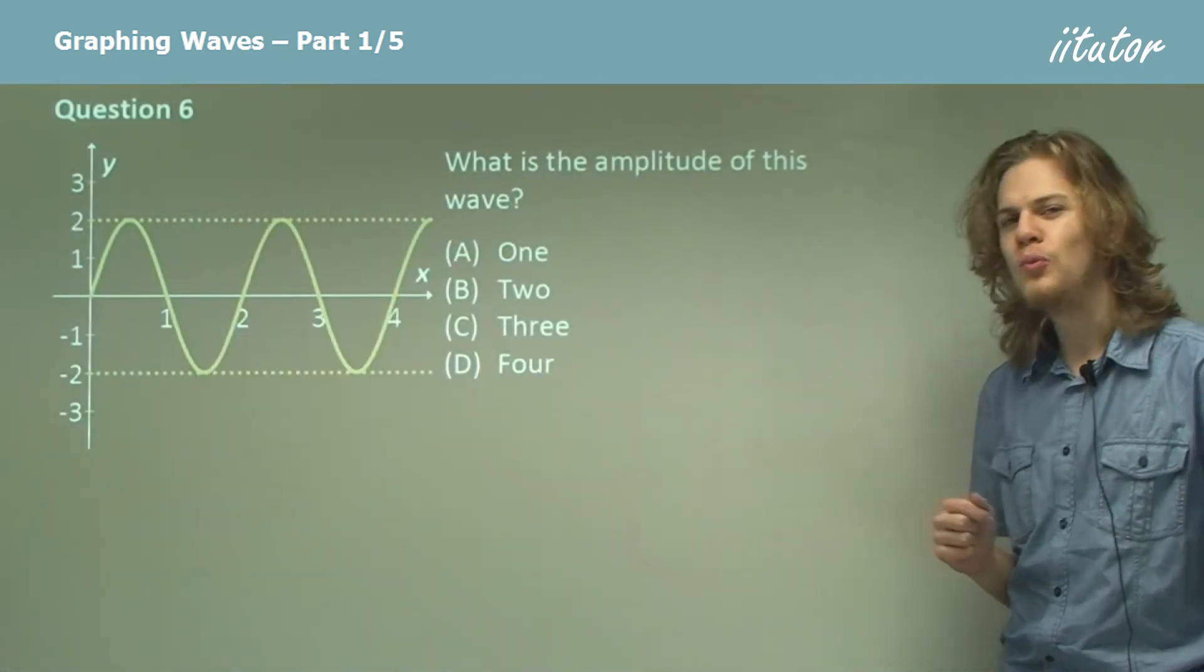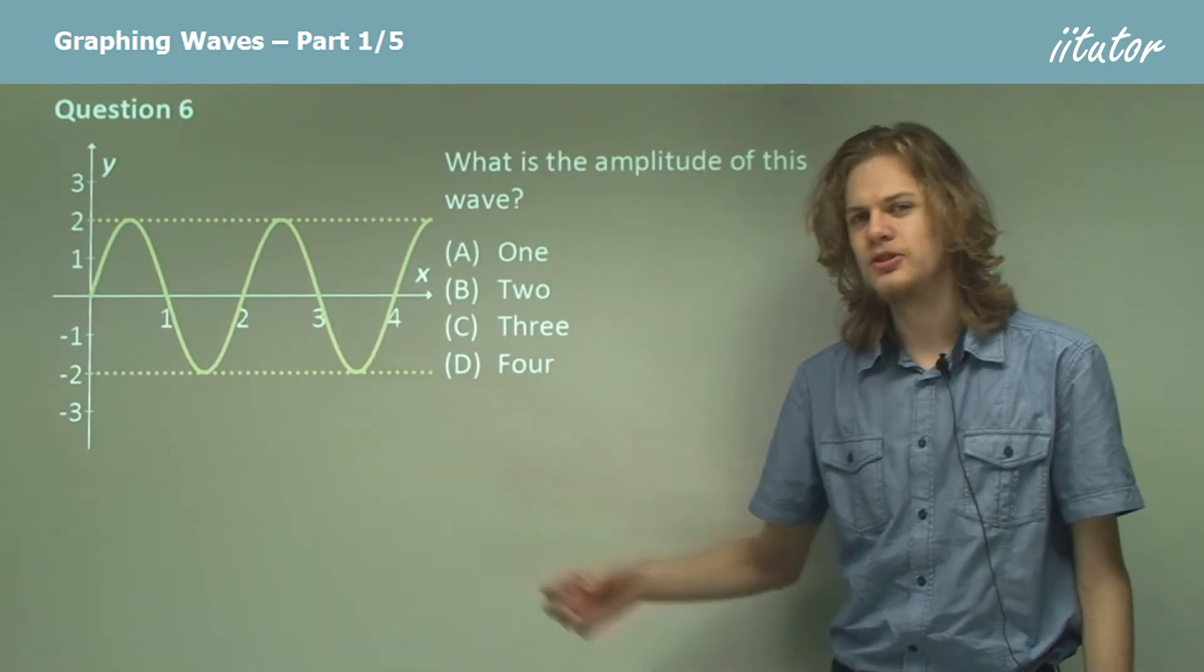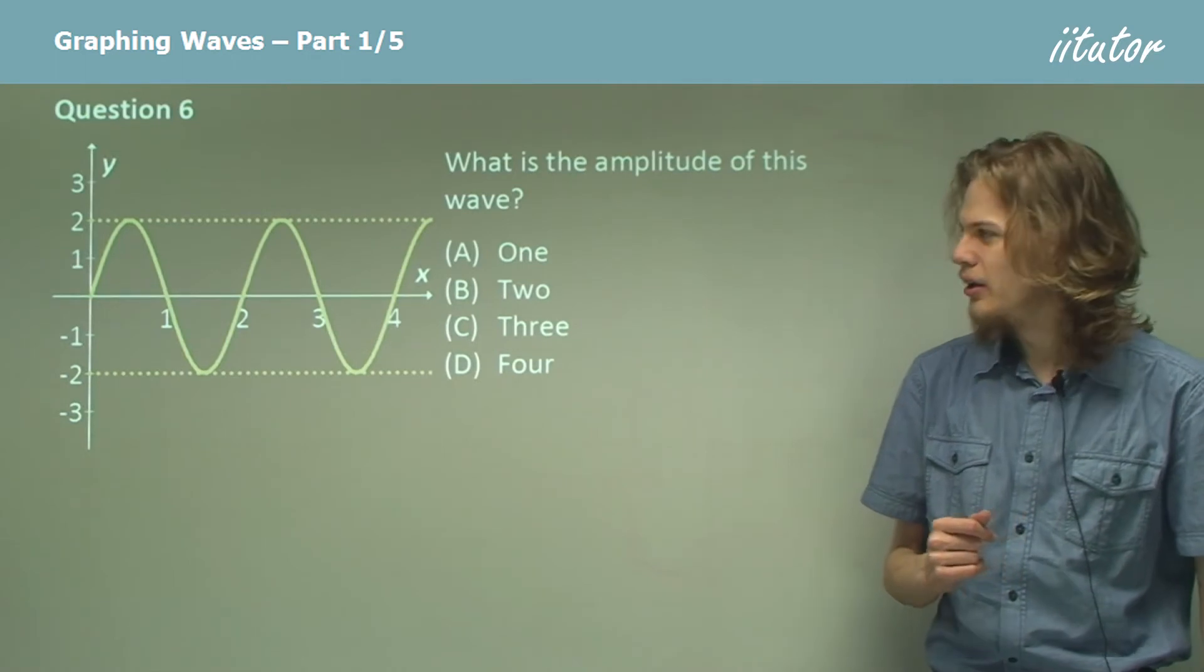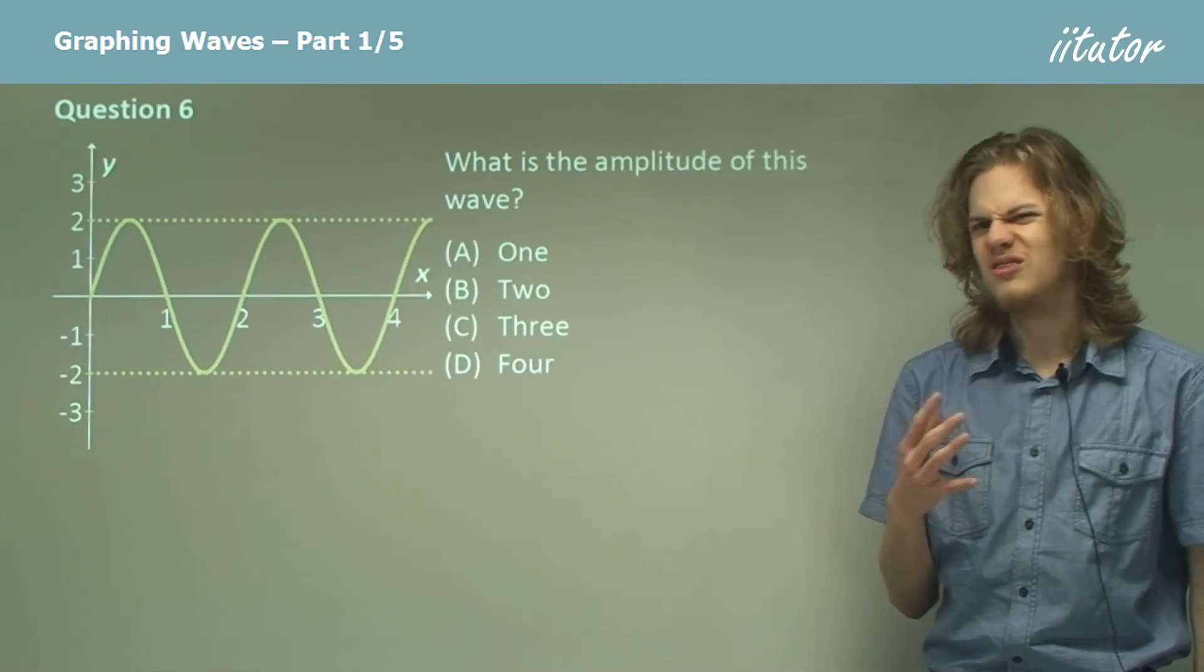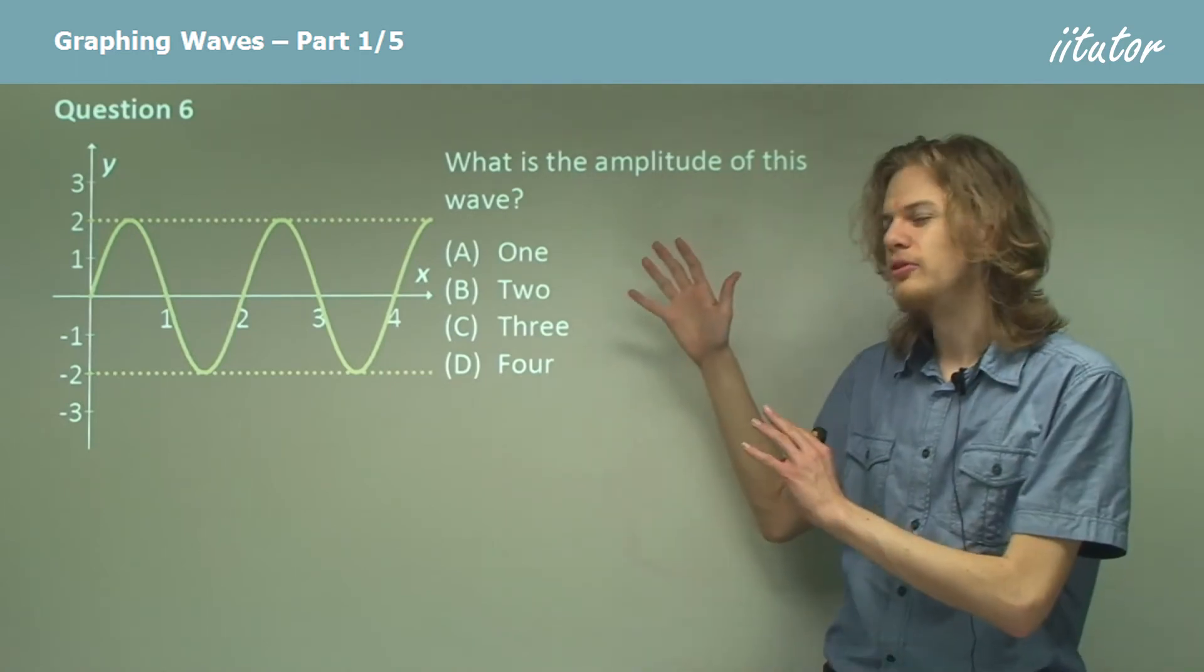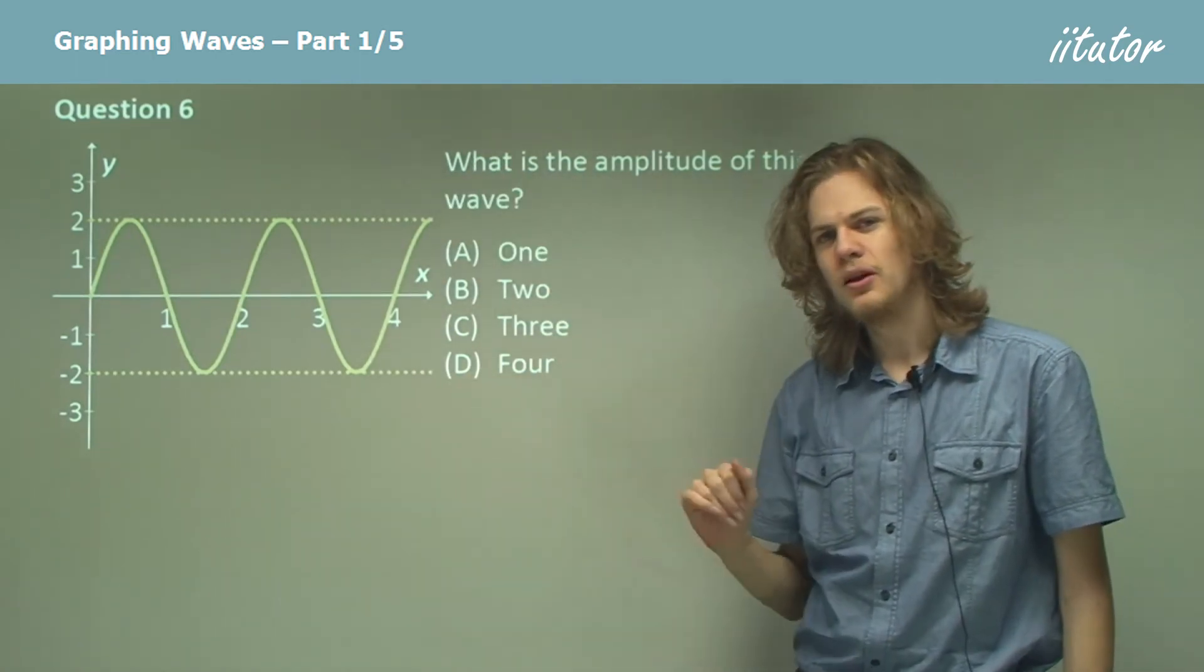What is the amplitude of this wave? I've drawn a bit of a hint on the diagram here showing you the maximum and minimum displacement of the wave. So the question really is: is the amplitude the distance between the maximum and the minimum displacement, or is it the distance between the maximum displacement and the rest position in the middle?